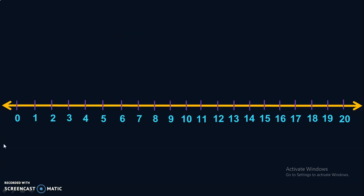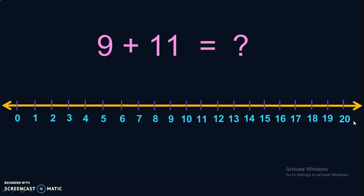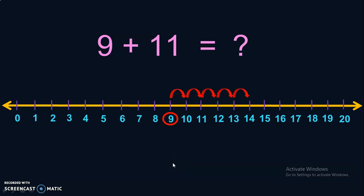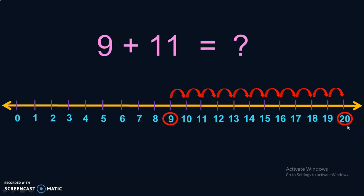Let us do another sum. Here we have a number line with numbers 0 to 20. We have to add 9 plus 11. First, locate 9 in the number line, then make 11 jumps: 1, 2, 3, 4, 5, 6, 7, 8, 9, 10, 11. When you make 11 jumps from 9, you reach the number 20. So, the sum of 9 plus 11 is equal to 20.